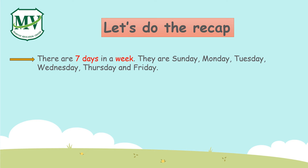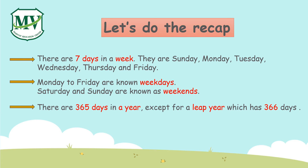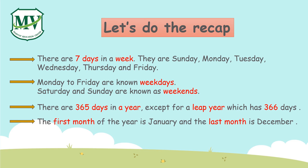There are seven days in a week. They are Sunday, Monday, Tuesday, Wednesday, Thursday, and Friday. Monday to Friday are known as weekdays. Saturday and Sunday are known as the weekends. There are 365 days in a year, except for a leap year which has 366 days. The first month of the year is January and the last month is December.